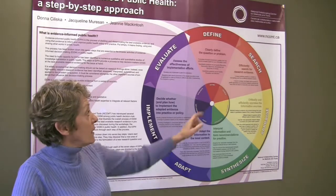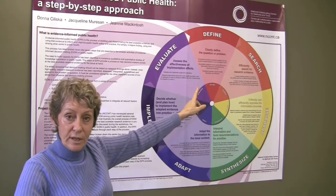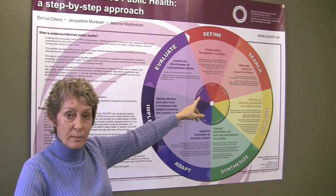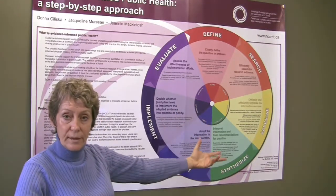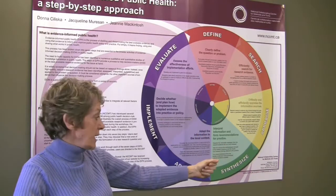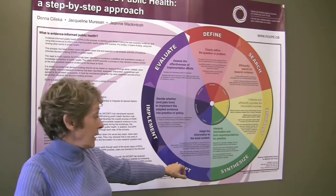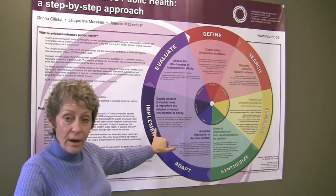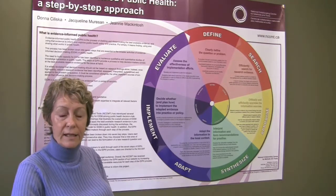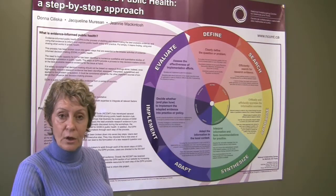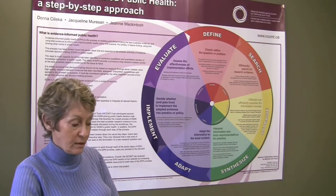We've been through defining the problem, searching efficiently for the evidence, the research evidence that exists in relation to the problem, critically appraising that research evidence, making a decision about how to bring that evidence together when it's perhaps conflicting, adapting it to the local context of your own community. And now we're on the phase of implementing — how do you plan for and implement the new interventions, or stop an intervention that you've decided to give up.